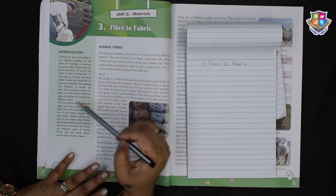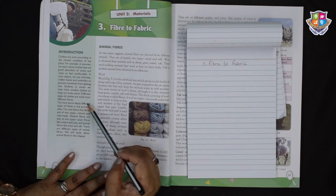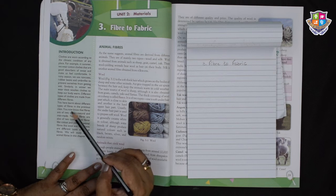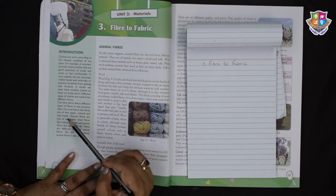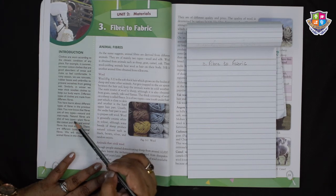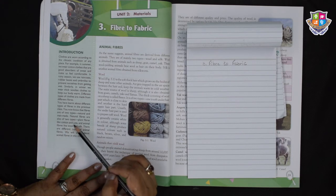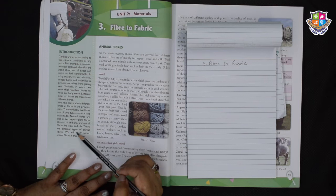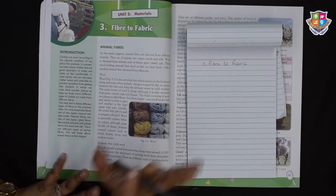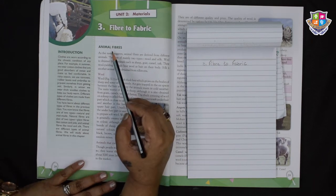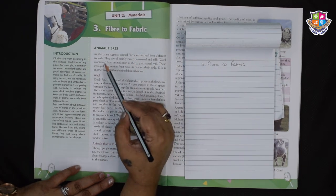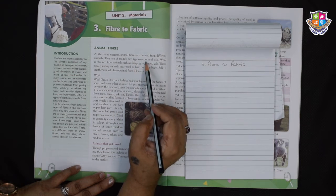Different types of clothes are made from different fibres. You have learnt about the different types of fibres in the previous class. You now know that fibres are of two types: natural and man made. Natural fibres are also of two types: plant fibre like cotton and jute, and animal fibres like wool and silk.